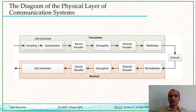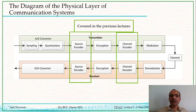Okay, so this is the diagram of the physical layer of communication systems that you all have seen multiple times earlier. And you know that we have covered the topic of source coding and channel coding in the prior lectures. We haven't had too much of an opportunity to do the encryption part of it.